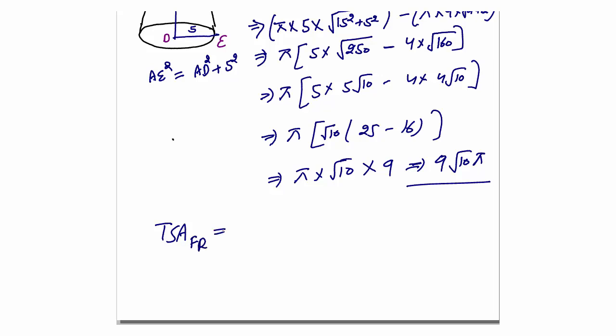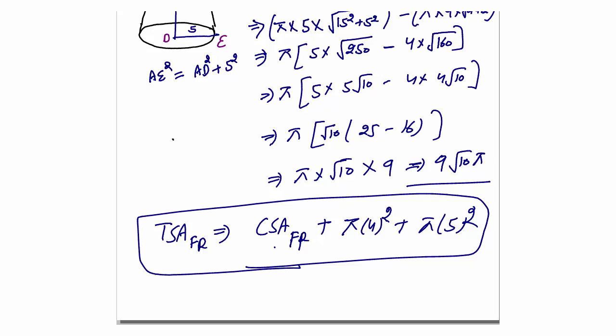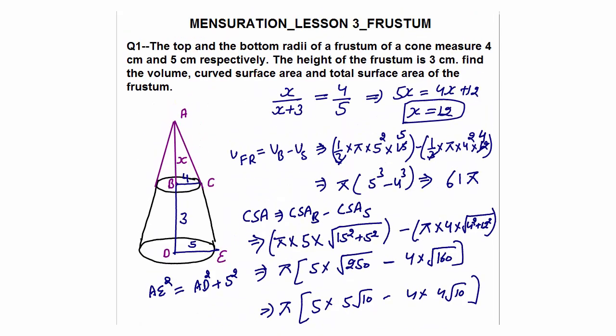Total surface area of frustum = curved surface area of frustum plus area of big circle plus area of smaller circle = 9√10 π + π × 4² + π × 5² = 9√10 π + 16π + 25π. In this way you can calculate all kinds of questions on frustum. The only thing you need to do is extend the frustum to make a cone, the two triangles will be similar, and you can find everything. No need to cram any formula — all questions can be solved in least possible time by basic common sense and simple concepts.